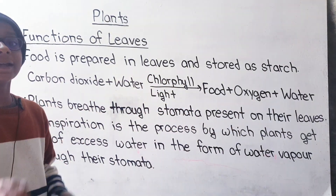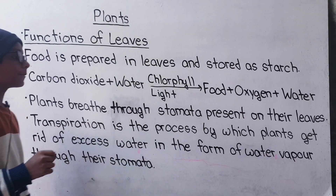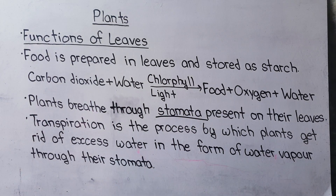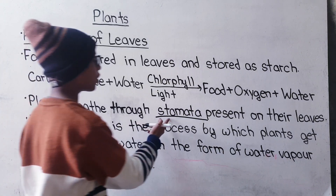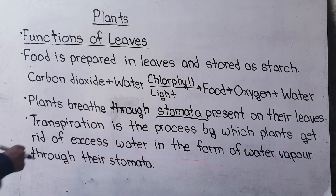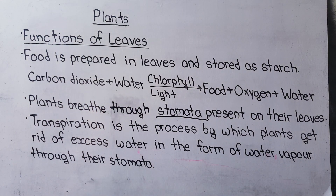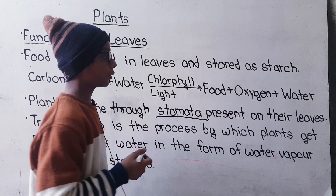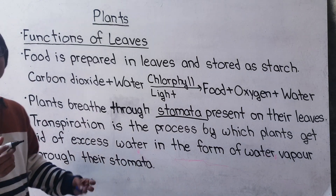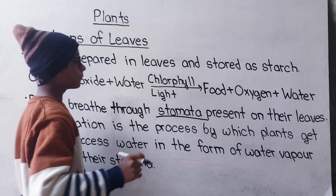Oxygen and water are also released in this process. Plants breathe through stomata present on their leaves. Stomata is the plural form of stoma. Stoma is a tiny hole which is present on leaves — small holes found under the leaves.